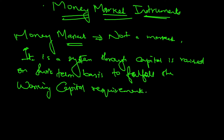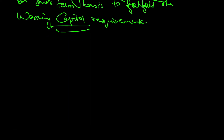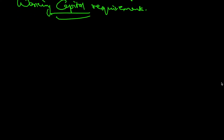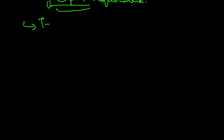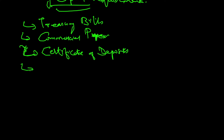So what are the different ways to get capital for the working capital requirement? That's where money market instruments come into play. The different money market instruments are: number one, treasury bills (T-bills); number two, commercial paper; number three, certificate of deposits.